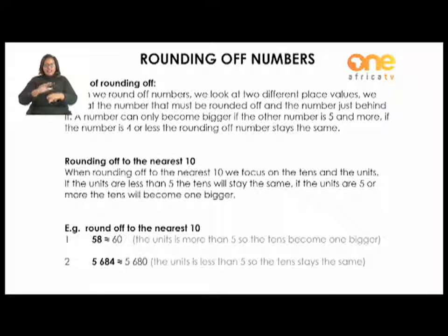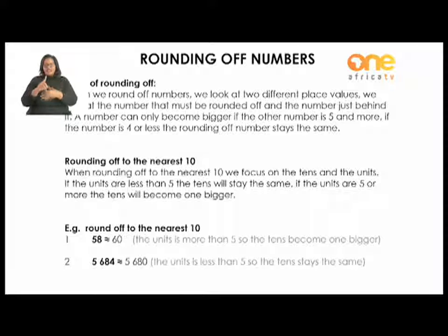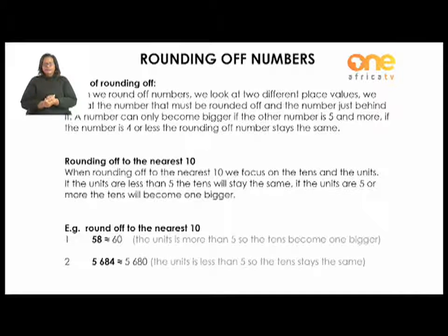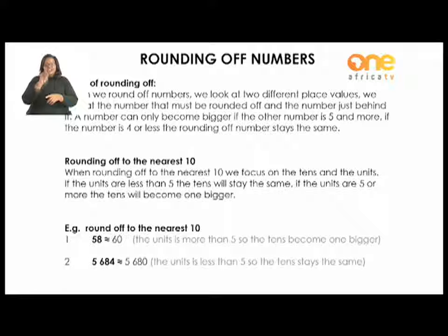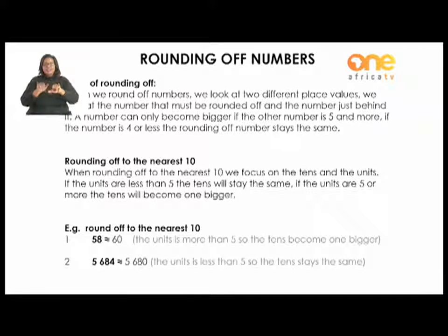Example two: 5,684 rounded off to the nearest ten. We find the number in the tens place, which is 8, and we look at the units, which is 4. The unit is less than five, so the ten stays the same — the 8 does not change. So 5,684 rounded off to the nearest ten becomes 5,680.